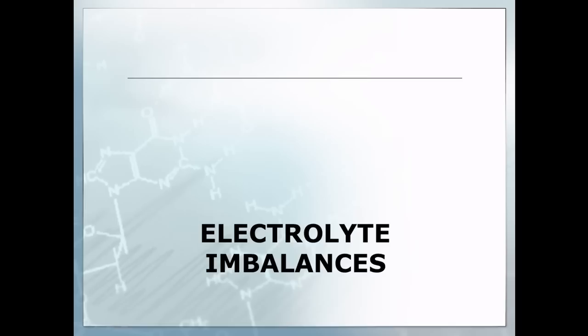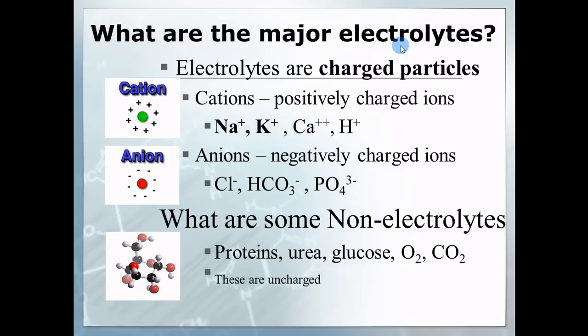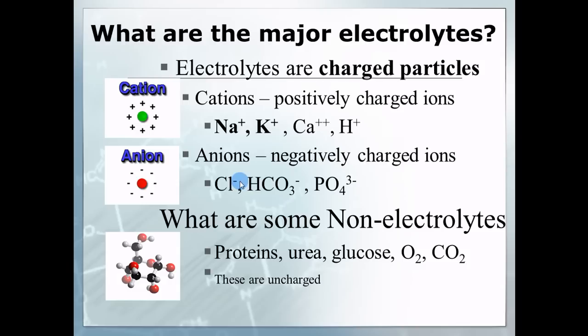When we look at electrolytes, first thing you need to do is look at 'electro' and think they're charged, like electrical. Here you have sodium with a positive charge, potassium with a positive, calcium with a double positive, hydrogen with a positive. These have all lost an electron and have a positive charge — we call them cations. Then the anions: chloride, bicarbonate, and phosphate — these have a negative charge.